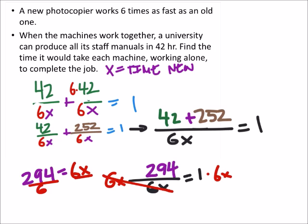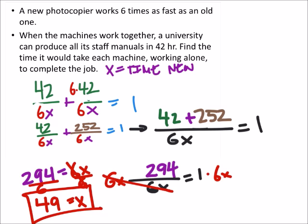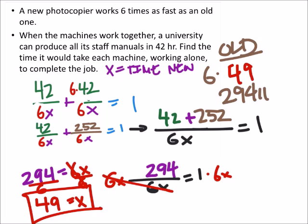Dividing both sides by 6, we find that the new machine would take 49 hours to complete the job. The old machine takes six times as long: 6 times 49 equals 294 hours. Those are our two answers. Working together it seems tough — 49 is a lot faster than 294 hours, but that makes sense since it's six times as fast.